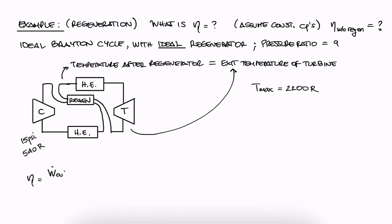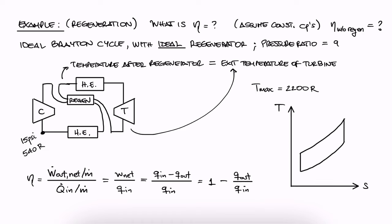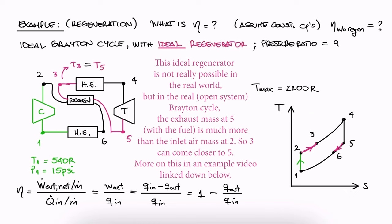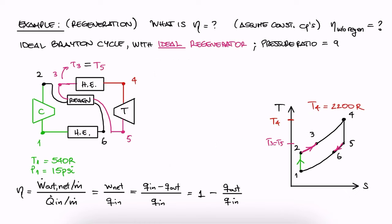The overall efficiency of the cycle is the network out over the heat in. Since we don't have mass flow rate information, we can just write this in terms of specific energy. The network out is the difference between heat in and out, and we can rearrange this as 1 minus the out to in ratio. If we draw a quick TS diagram and label the states in order with state 1 being the air before the compressor, we see that the ideal regenerator makes states 3 and 5 have the same temperature. The highest temperature would be that of state 4 right before the turbine. Since Q23 is equal to Q65, because it's the heat exchange at the regenerator Q region, Qin would be the heat between 3 and 4, and Qout would be the heat between 6 and 1.